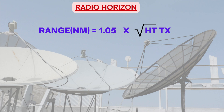Secondly, if the height of the receiver is not given, then the signal will only travel up to the radio horizon. The formula for radio horizon is also shown on the screen, where height of transmitter is in feet and range is in nautical miles. Remember this formula also for the purpose of the exam.